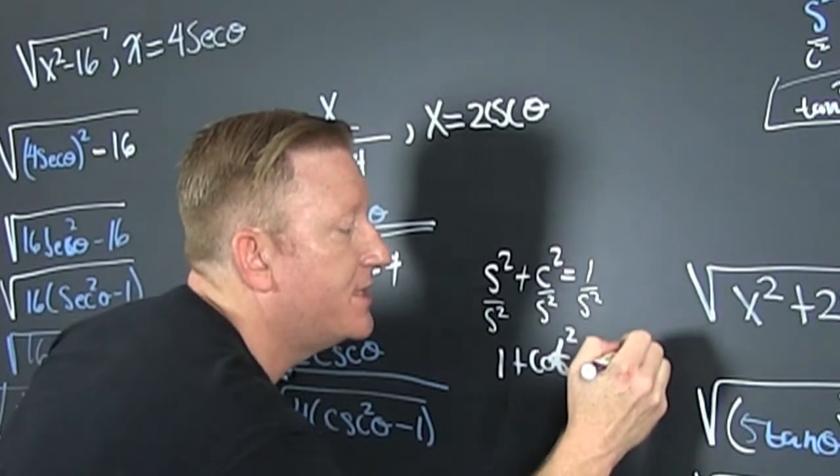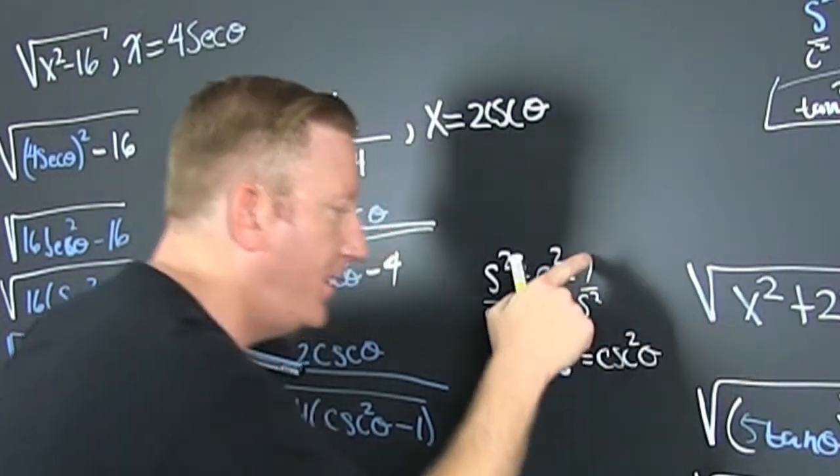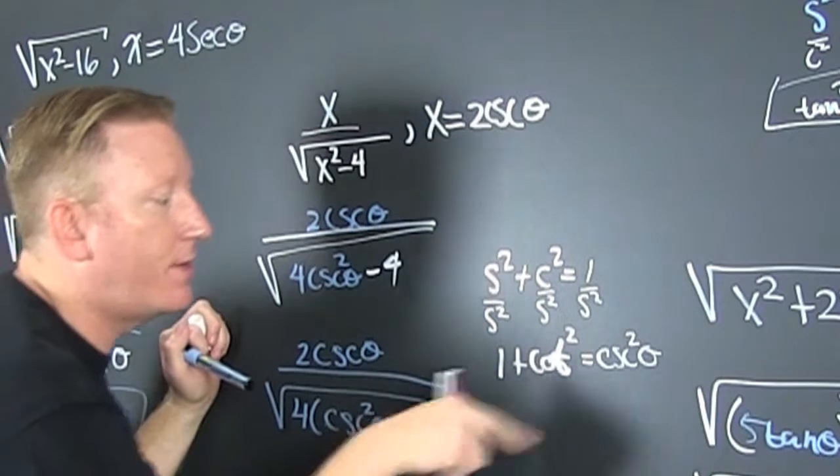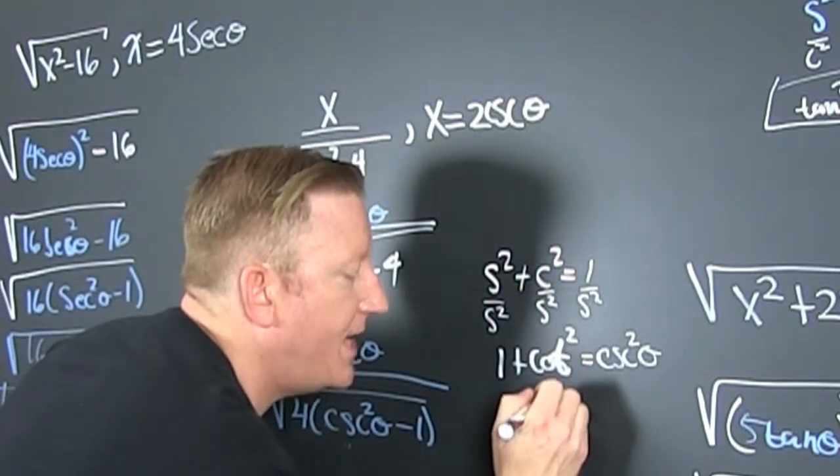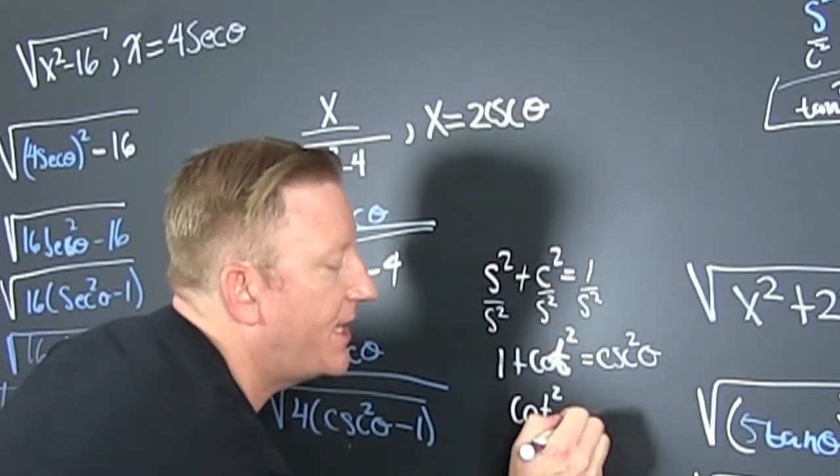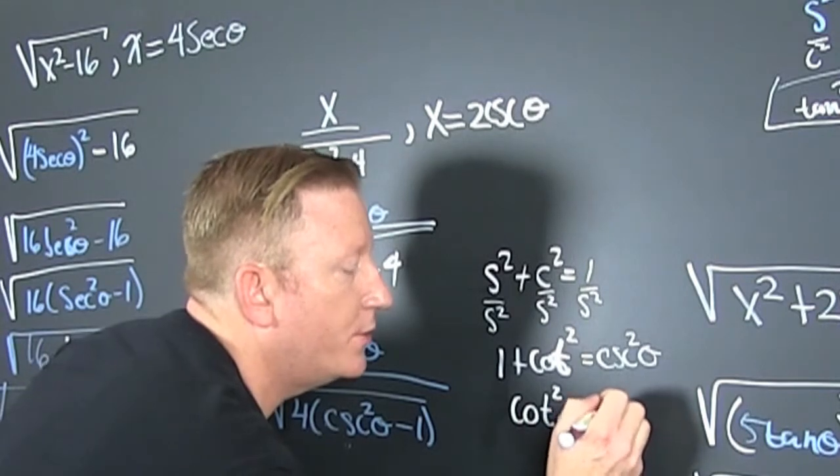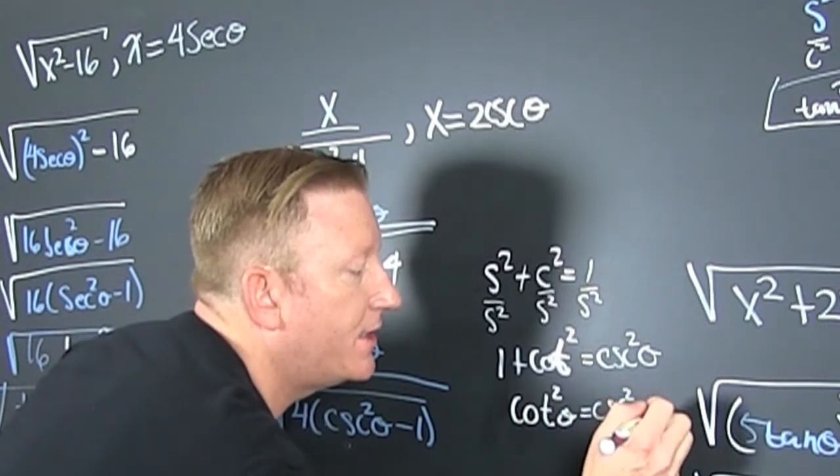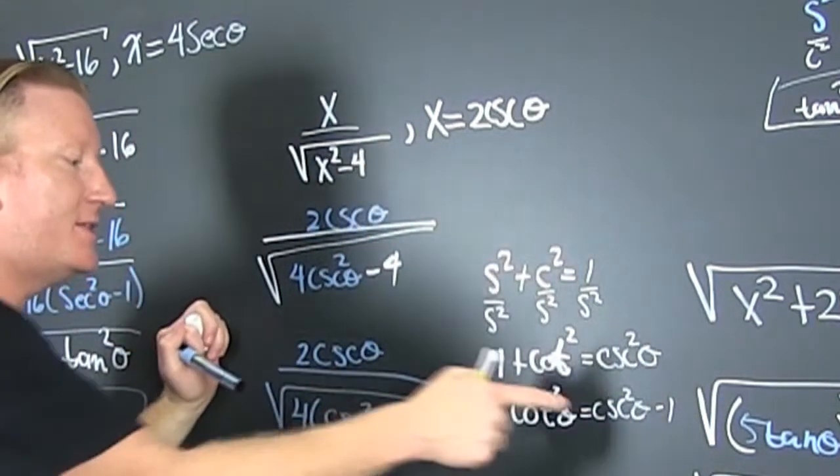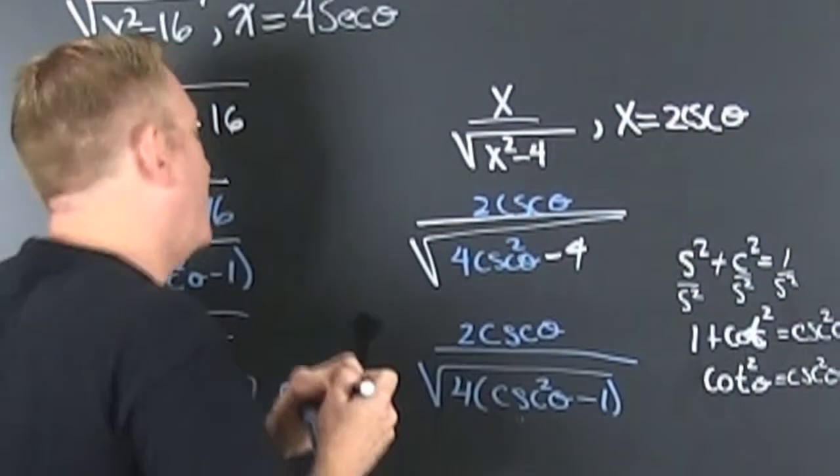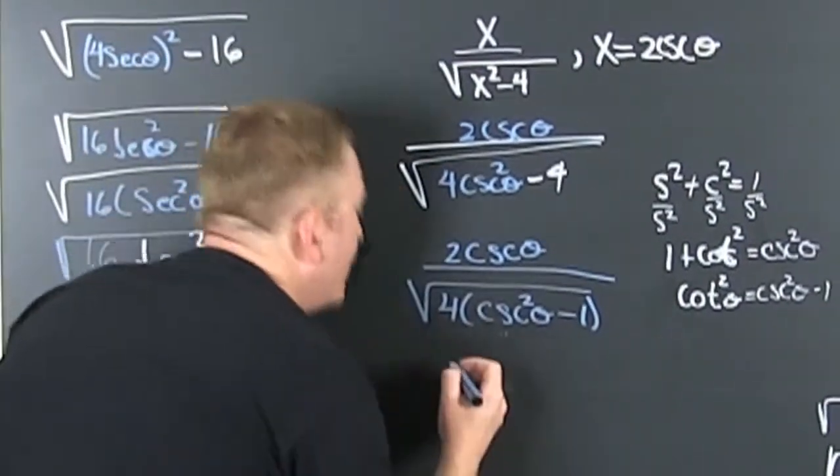That's equal to cosecant squared theta. But wait. I want cosecant squared minus one. So the cotangent squared theta is equal to the cosecant squared theta minus one. Fun. There it is. There it is. Where's all your woomp? Well. There it is.